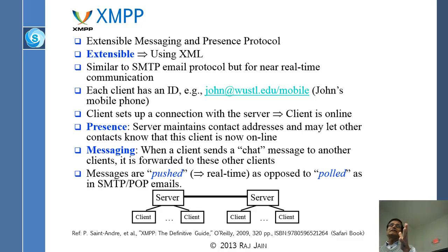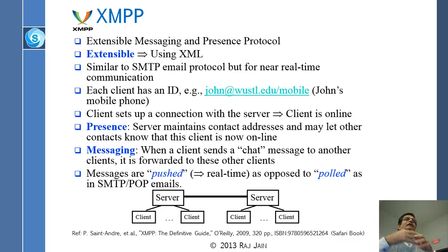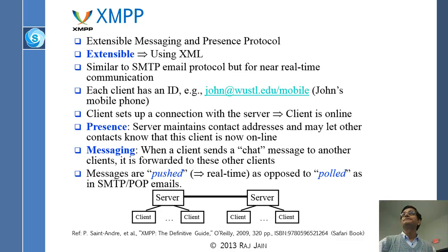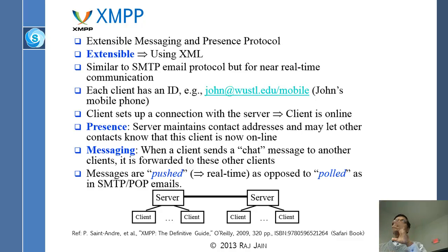XMPP was actually not designed for SDN — it was designed for messaging and presence. Messaging and presence is what Skype does: when you log into Skype, everybody in the world knows you are online. If they are your friend, they can talk to you. Other chat programs do exactly the same: when you come online, your presence is told to everybody who needs to know. Then once they know your presence, they can message you.